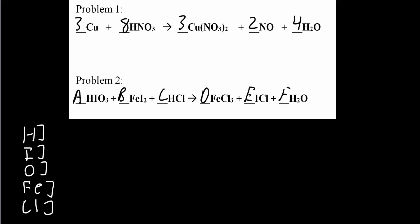So now we're going to do the H term. So where do we have H in the reactant? We have A here and C. So A plus C is equal to, where do we have H here? We have two F's, two F.